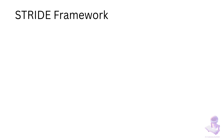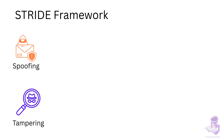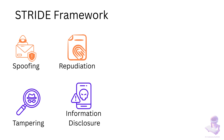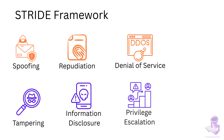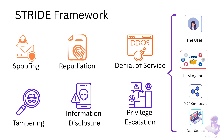When we threat model, we need a structured way to think about different kinds of attacks. That's where the STRIDE framework comes in. STRIDE breaks threats into six categories: Spoofing — pretending to be someone else; Tampering — altering data or requests; Repudiation — denying actions without proof; Information Disclosure — leaking sensitive data; Denial of Service — disrupting availability; and Privilege Escalation — gaining more access than intended. By applying STRIDE across MCP's assets and boundaries, we can systematically uncover where risks live and how to defend against them.